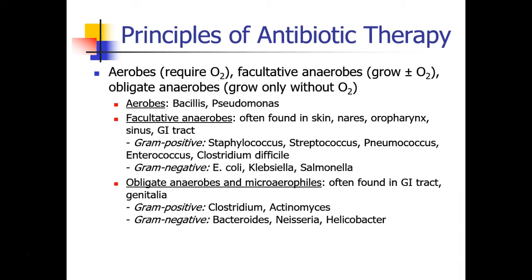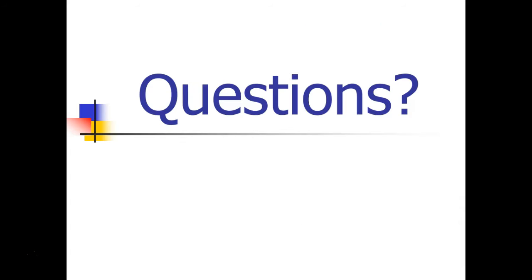The obligate anaerobes, and also the microaerophiles, which do best in low oxygen environments, are often found in oxygen-poor environments like the GI tract or the genitalia. These include Gram positives like clostridium and actinomyces, and Gram negatives like Bacteroides, Neisseria, and Helicobacter. All of this really serves mostly as an overview and a foundation for you to understand the concepts as we discuss them relative to different antibiotics.